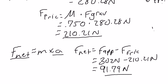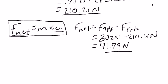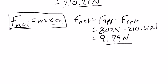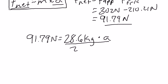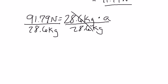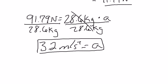We've calculated F_net. Now we can go back to Newton's second law and solve for acceleration. Since we know the mass and the total net force, we plug in 91.79 newtons equals 28.6 kilograms times acceleration. Dividing both sides by 28.6 kilograms, we get 3.2 meters per second squared — and that is the acceleration of the crate.